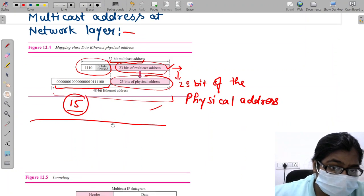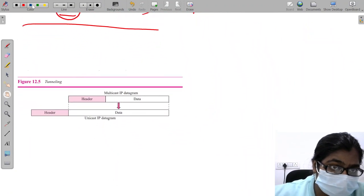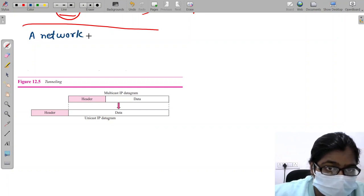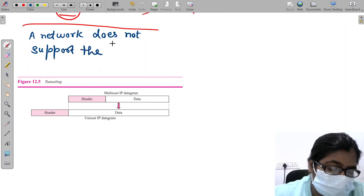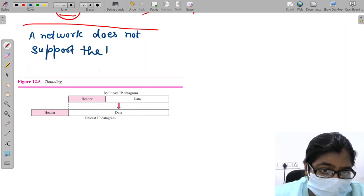And the second thing is what if a network does not support the multicasting?